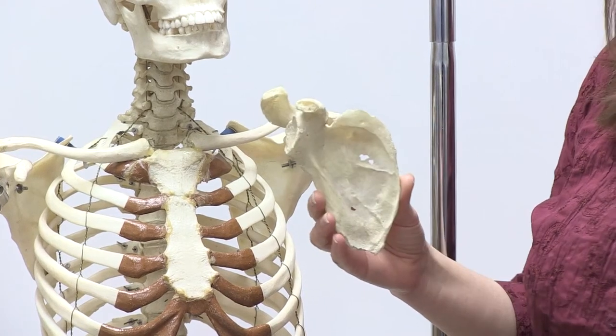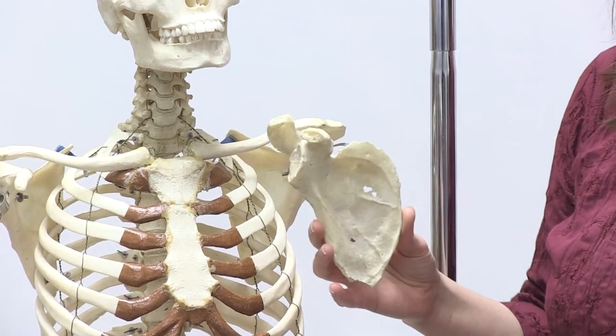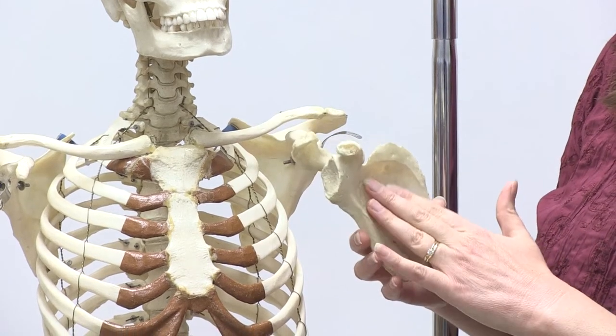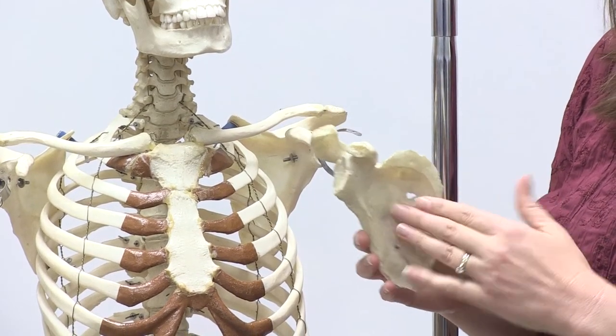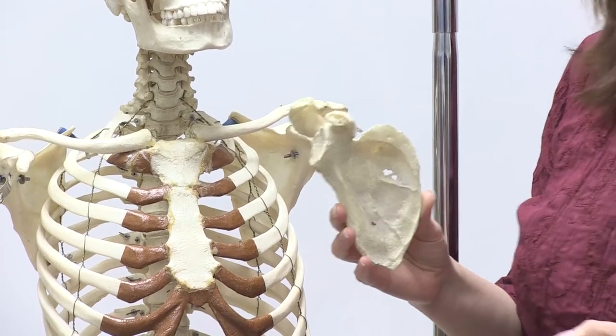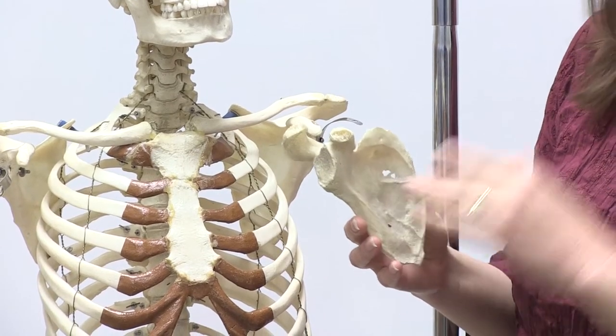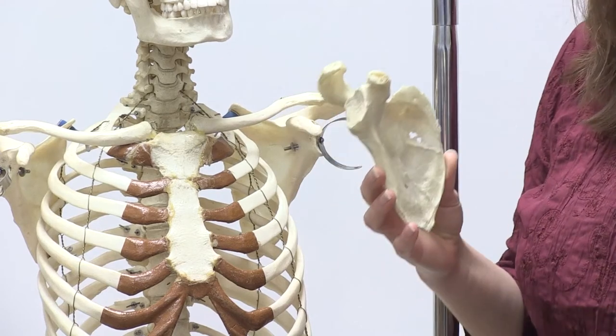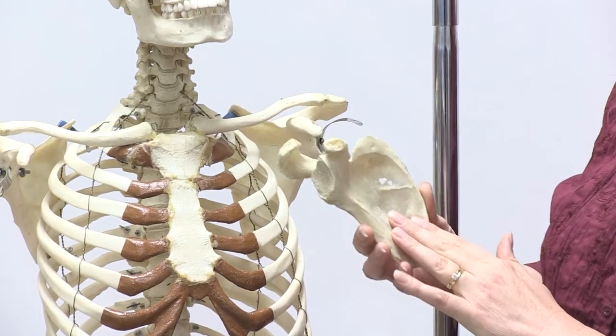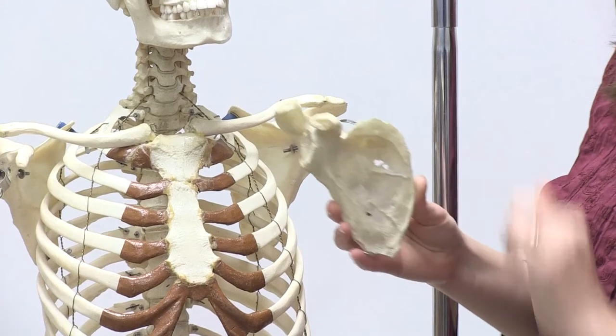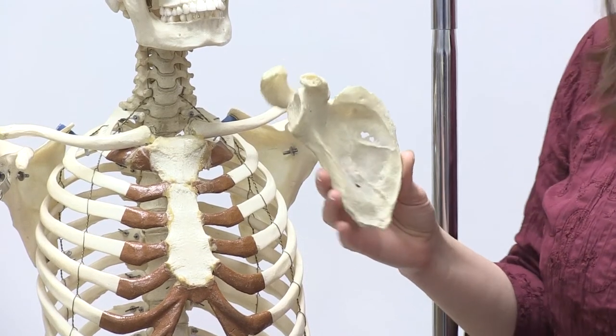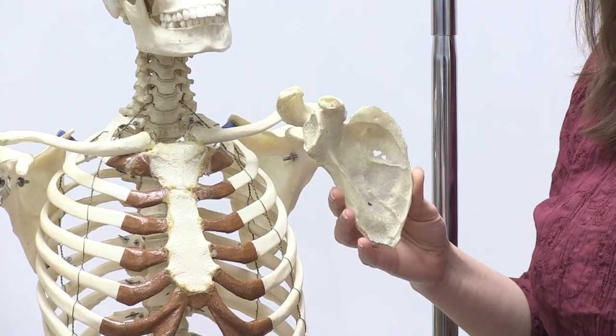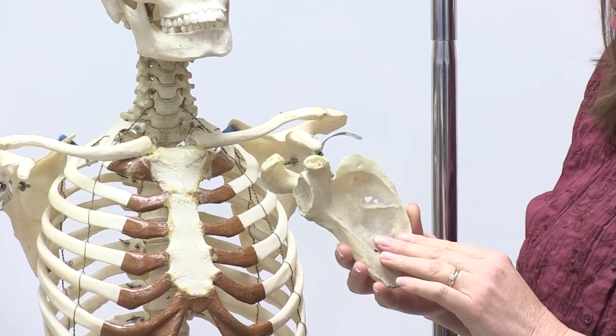Also on the anterior side, you have the coracoid process, and it's important on any kind of test that you watch the spelling, because as you'll find out, if you have started learning the skeletal system, there are some very closely similar names that look very similar in spelling. This coracoid process is actually one of the structures that certain shoulder ligaments actually attached to.